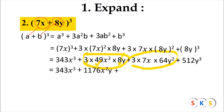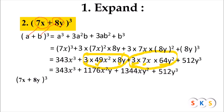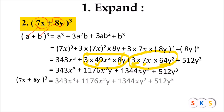Similarly, we multiply 3 with 7 and then with 64. So 7x plus 8y the whole cube equals 343x cubed plus 1176x squared y plus 1344xy squared plus 512y raised to 3.